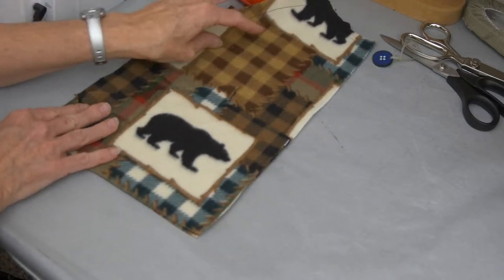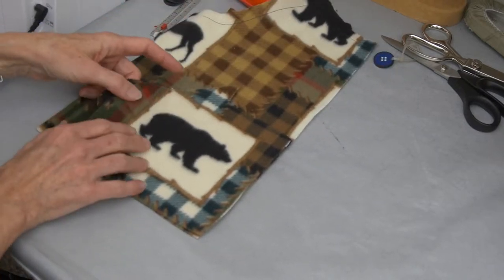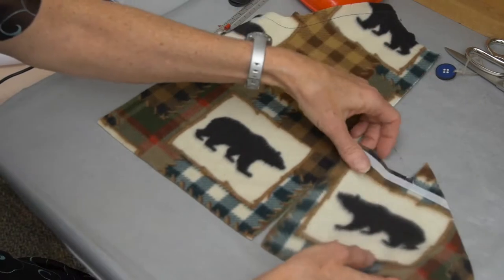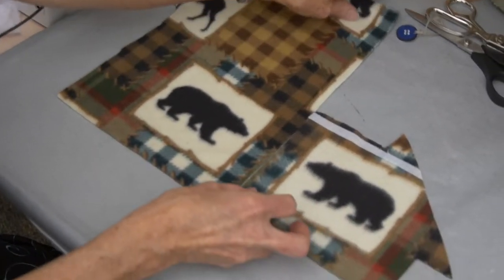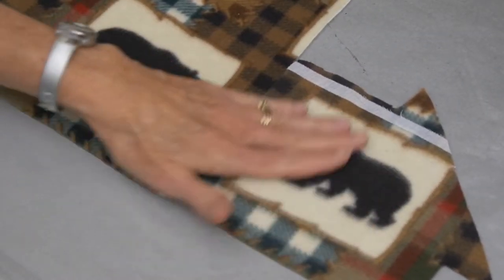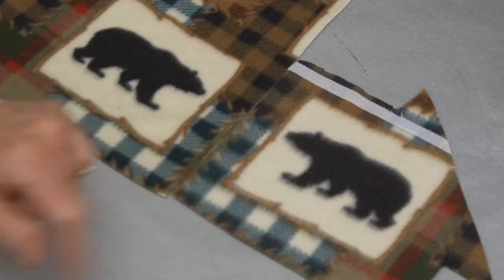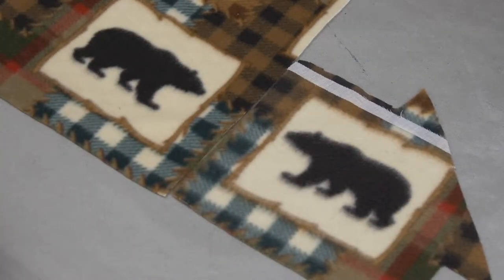We're going to follow the directions in your pattern guide with one additional step to it. And again, as I flip this over, this is a good example of you can see the right side of the fabric versus the wrong side of the fabric. This bear just looks a little bit more out of focus, if you will.